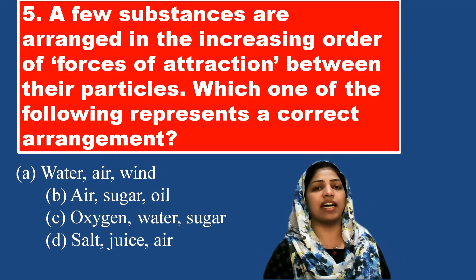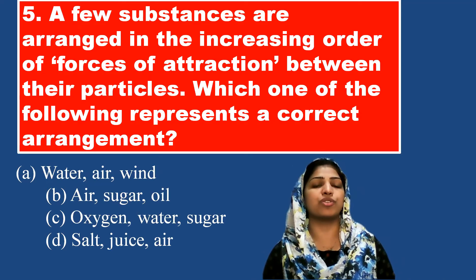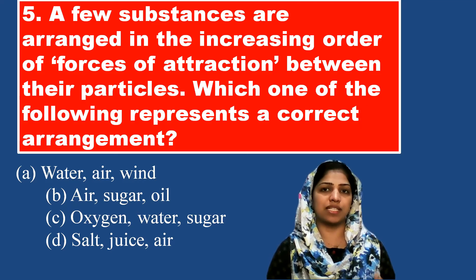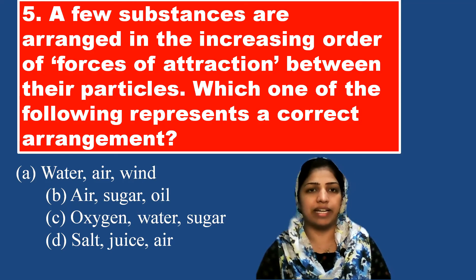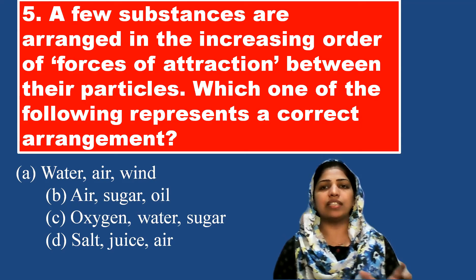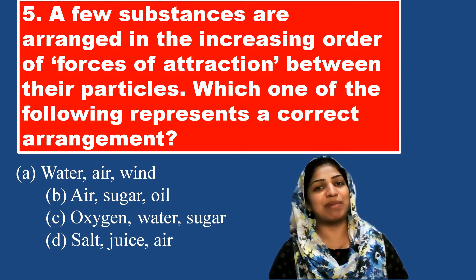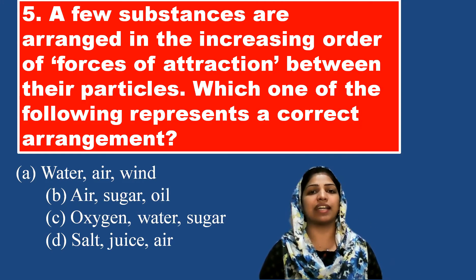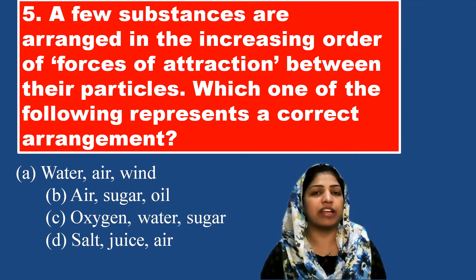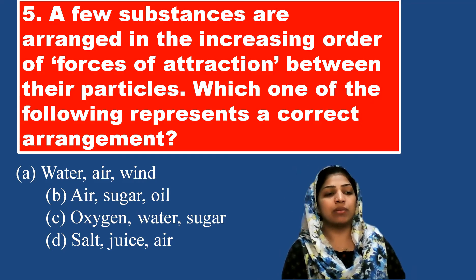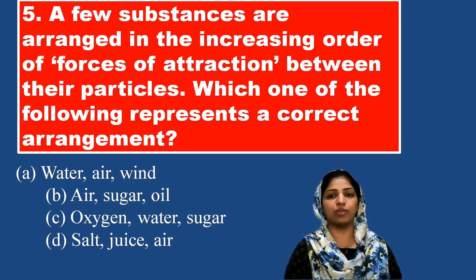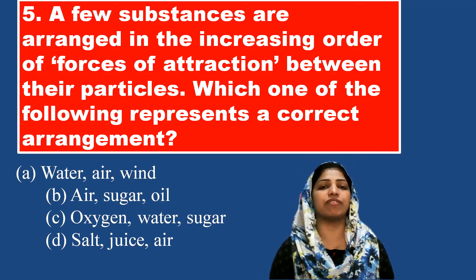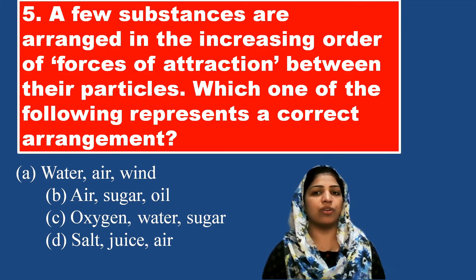A few substances are arranged in increasing order of force of attraction between the particles — intermolecular force of attraction. Which one of the following represents a correct arrangement? If you have a small force of attraction, the sequence goes from gases to liquids to solids. Gases have the smallest force of attraction, liquids are intermediate, and solids have the highest.